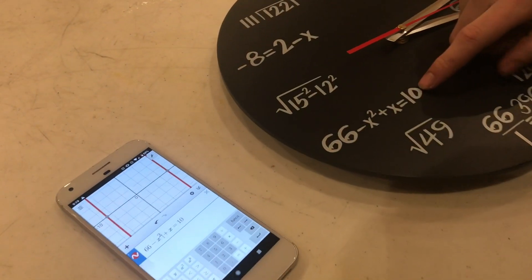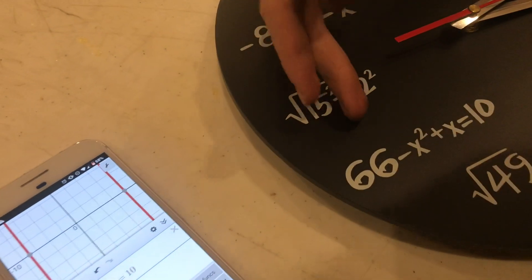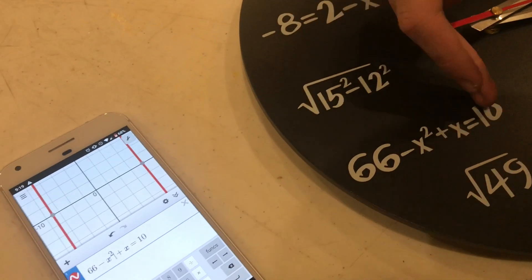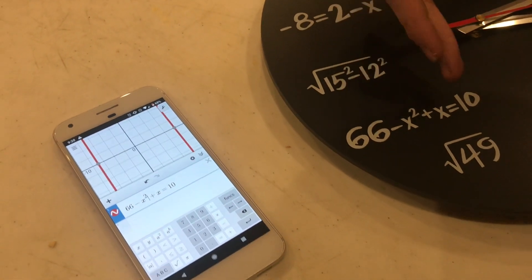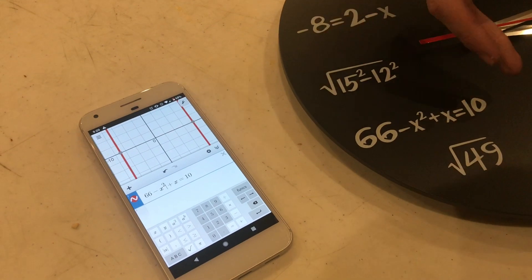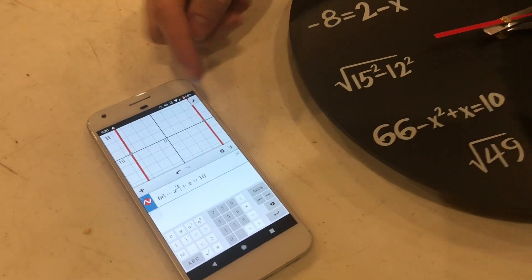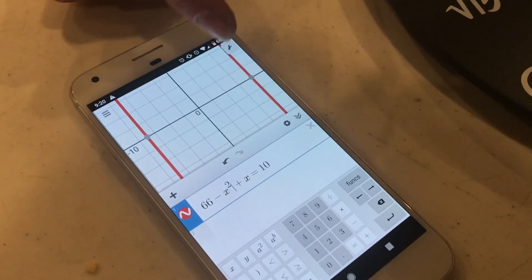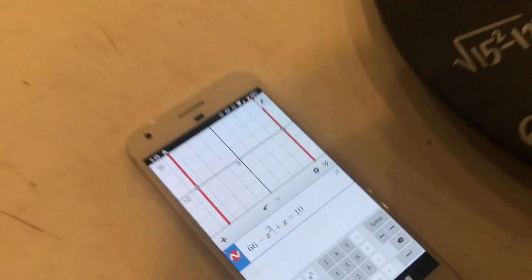So I went ahead and graphed this function just to see what it actually did give, because I suppose there would be a positive and a negative answer like there normally are for quadratic functions. So here's the graph right here, and it's a pretty steep parabola. The vertex is